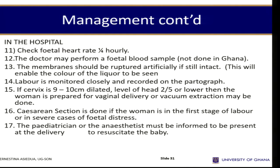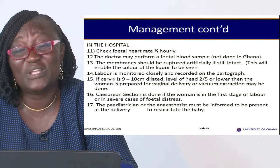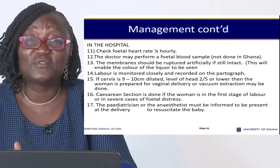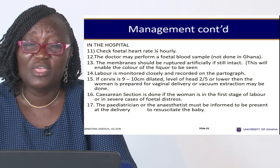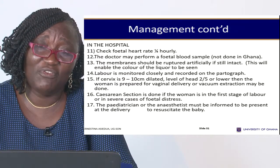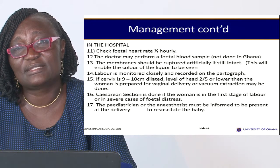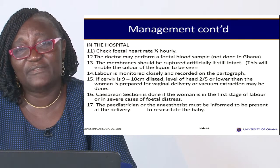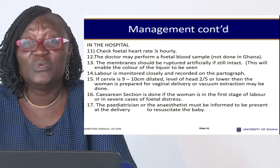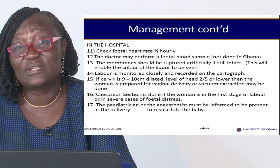If the cervix is 9–10 cm dilated and the head is at two-fifths, prepare the woman for vaginal delivery. Caesarean section is done if the woman is in the first stage of labour and fetal distress occurs too early — you don't have time to wait for full dilatation. Fetal distress is one of the major fetal indications for caesarean section. The paediatrician or anaesthetist must be informed to be present at delivery to resuscitate the baby.